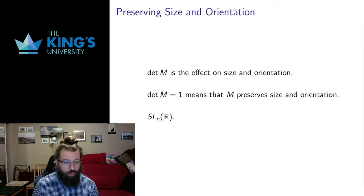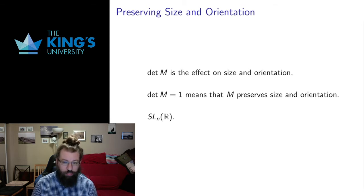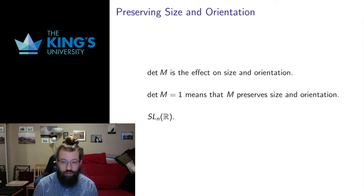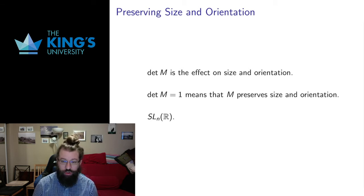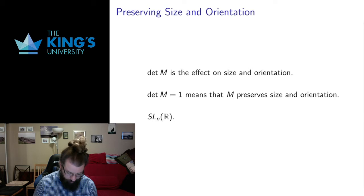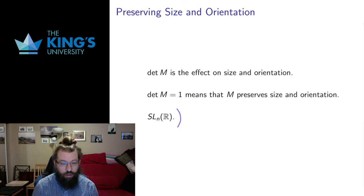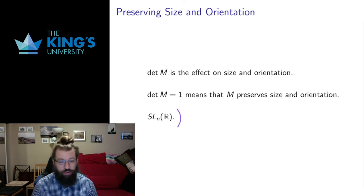I can look at what we did a couple of weeks ago with determinants and also consider that a kind of symmetry property. The determinant of the matrix is the effect of the matrix on size and orientation. If the determinant is equal to one, that means the matrix preserves size and orientation. We have a nice notation for these matrices: this is SL_n of R, all the invertible matrices of determinant one. This is called the special linear group — SL stands for special linear.